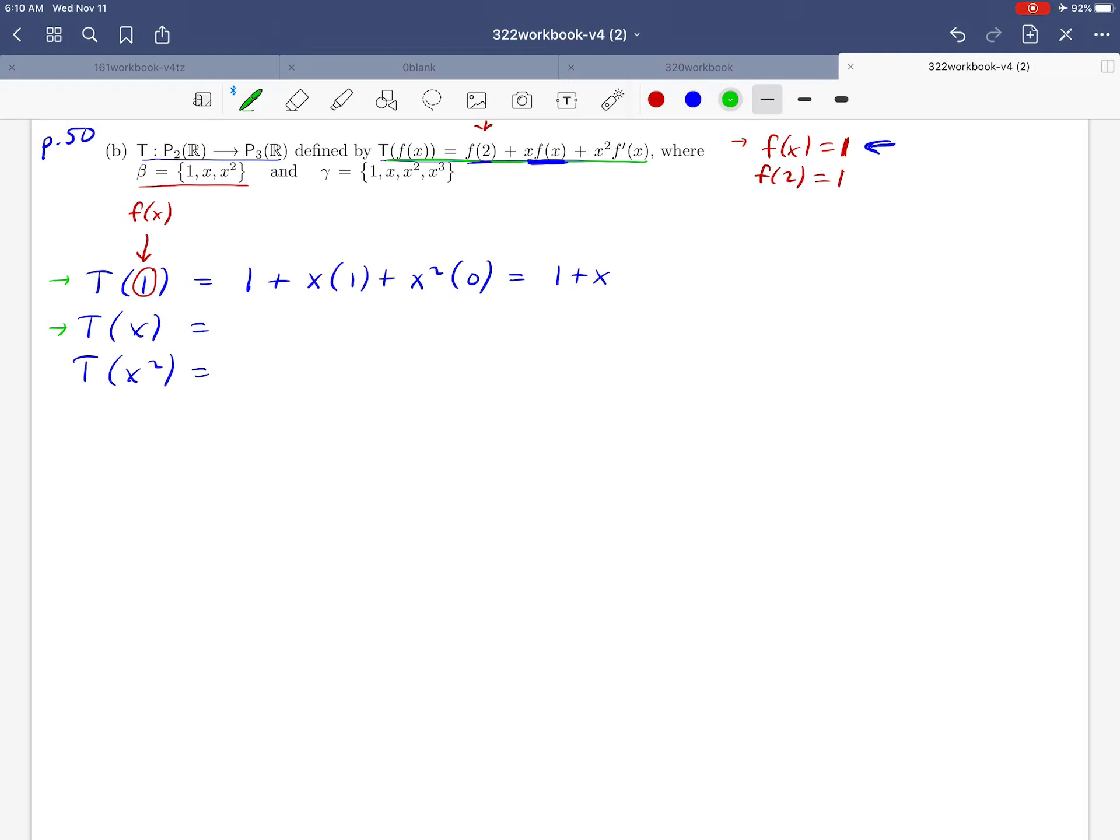T of x. And same deal here. This time, the f of x that we're plugging in looks like x. So let's go back up here and do that again. So if we start from the assumption that f of x is equal to x, then the first thing that we need to calculate would be f of 2. If f of x is equal to x, then f of 2 is 2. So that's the first thing we're going to write down. And then we come to x times f of x.